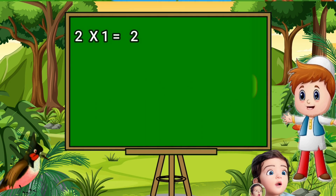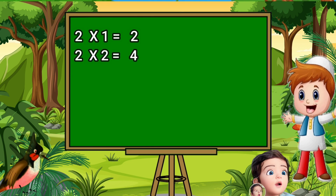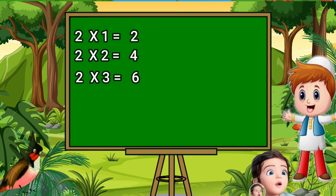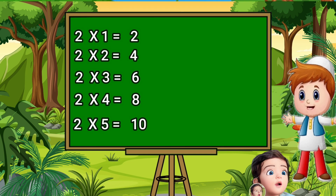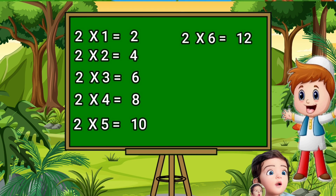Two ones are two. Two twos are four. Two threes are six. Two fours are eight. Two fives are ten. Two sixes are twelve.